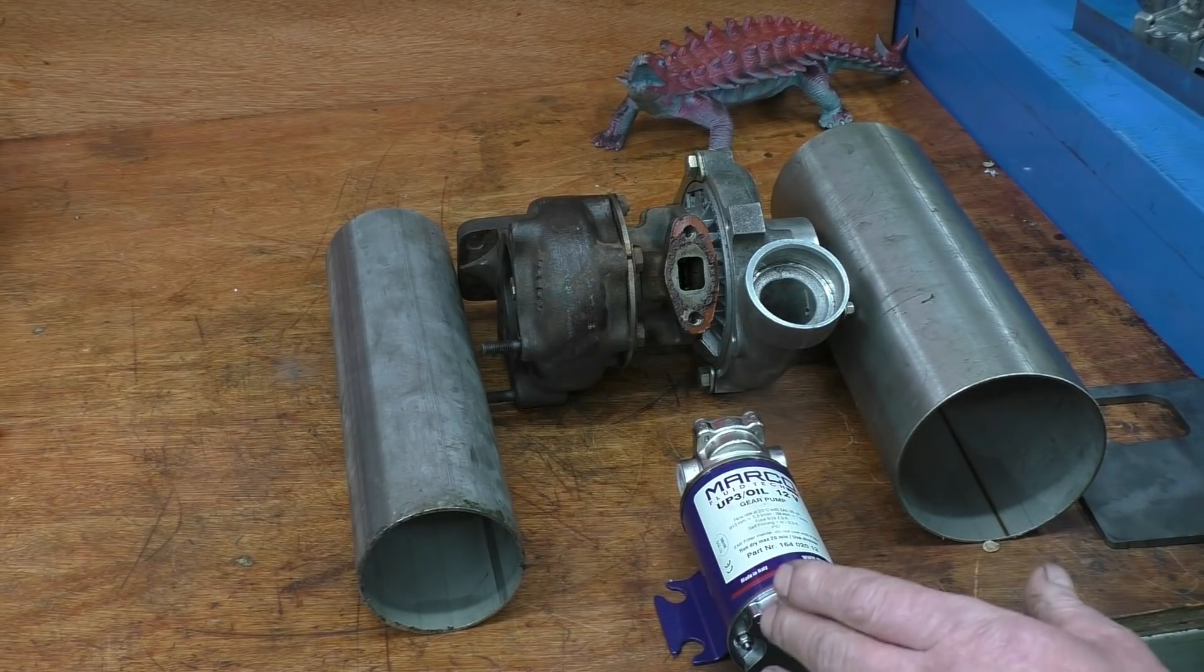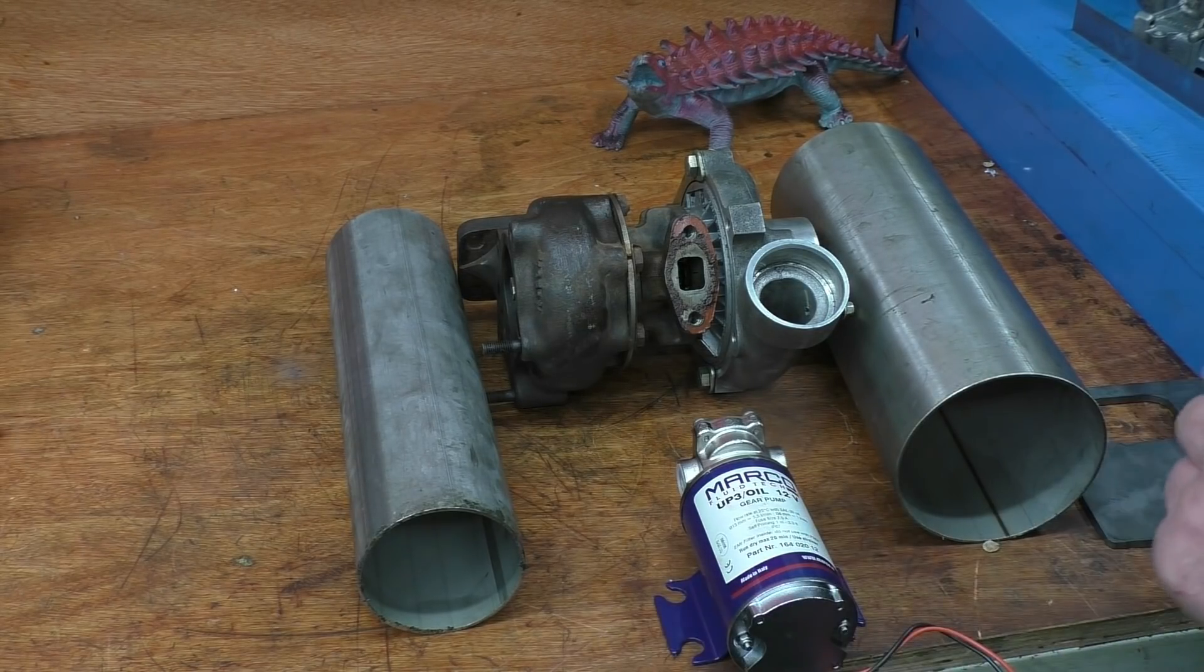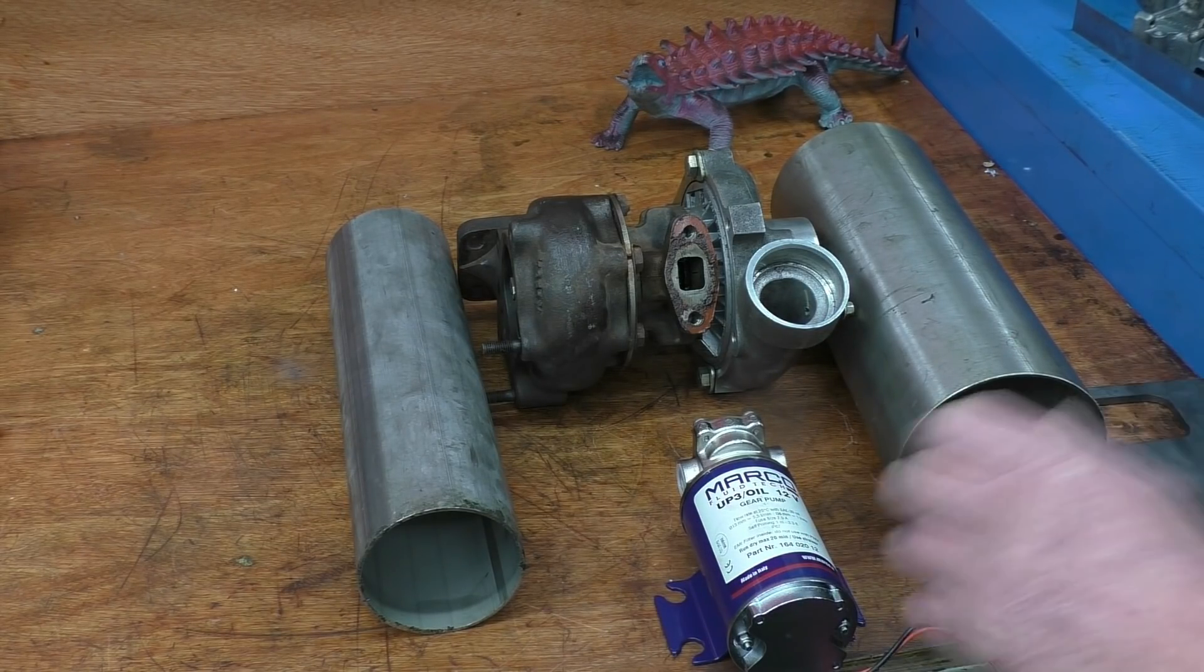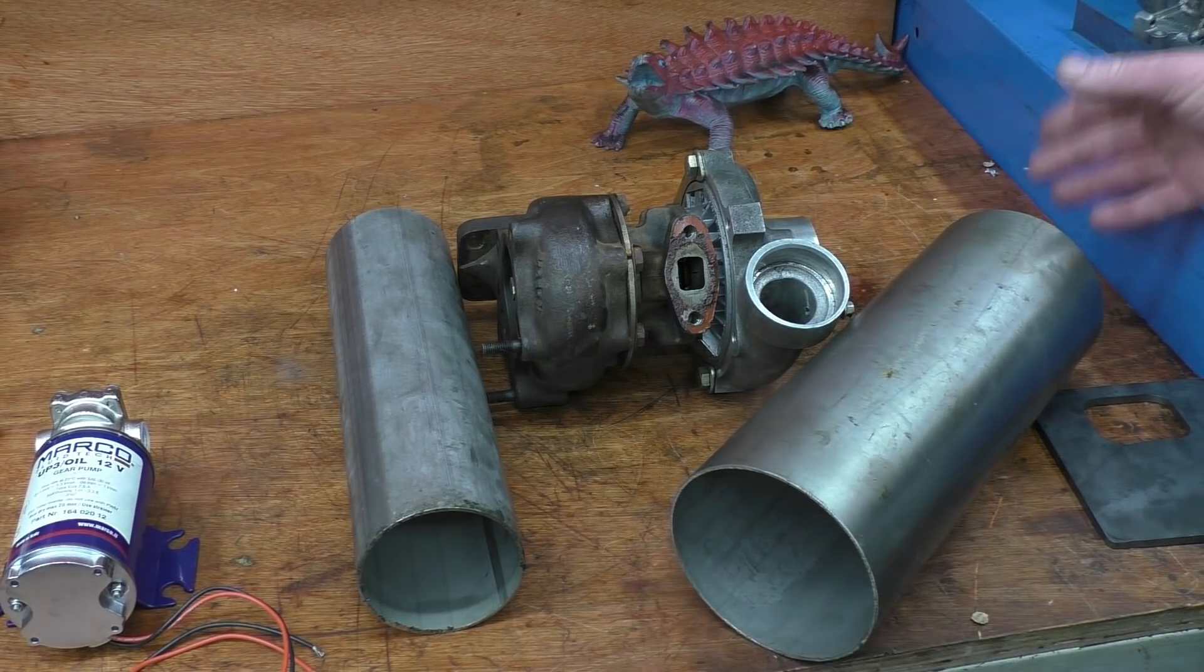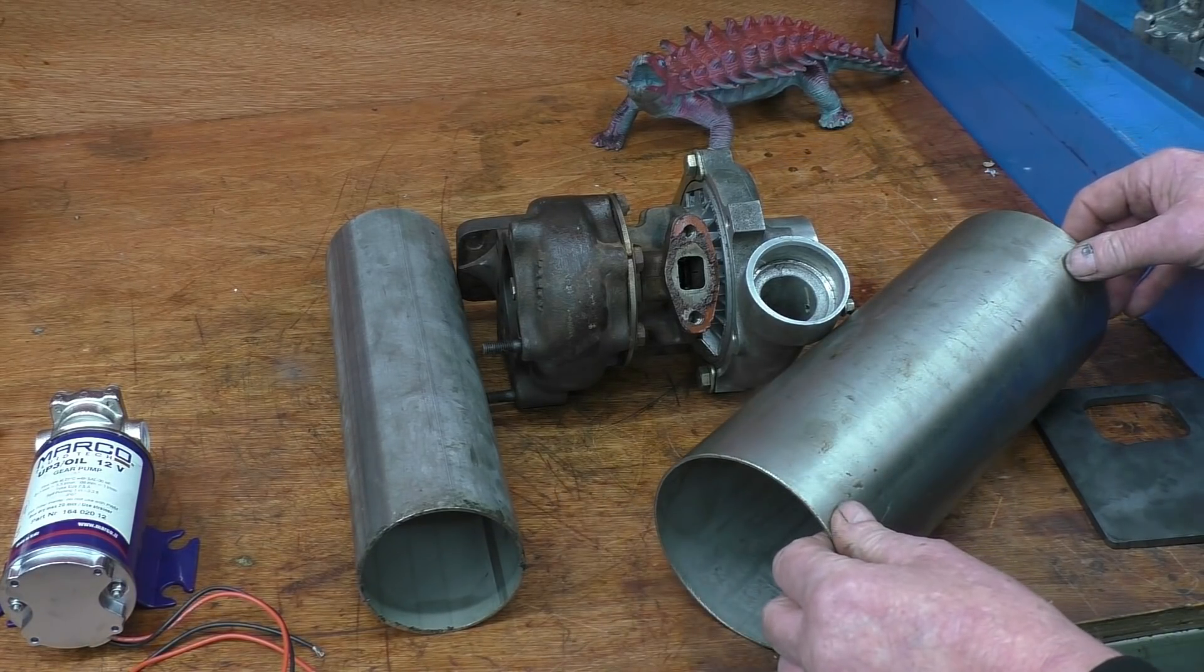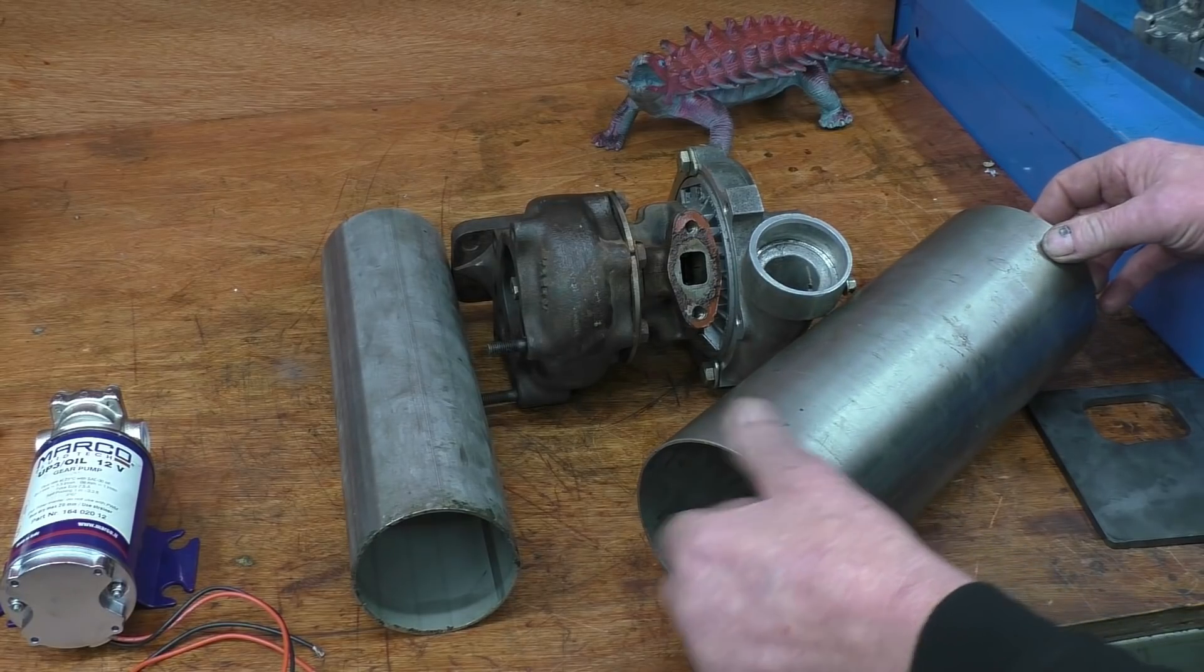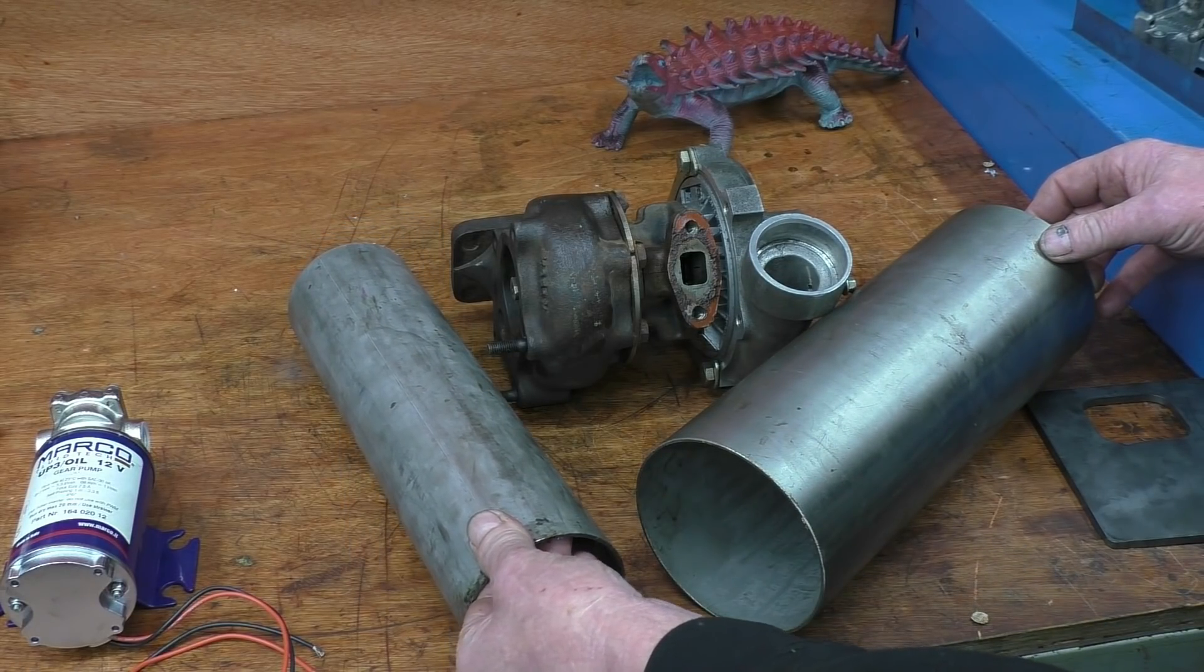To circulate oil through the turbocharger. Without oil, this turbocharger won't last seconds. I've got some tube, stainless steel tube. Doesn't have to be stainless, just I happen to get stainless tube, but tube for the burner can and tube for the flame tube.